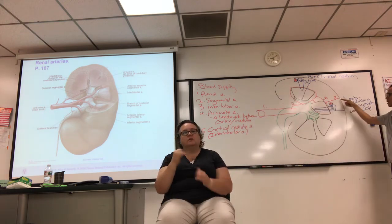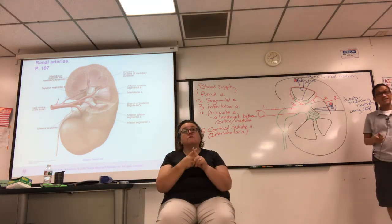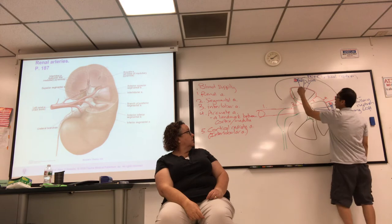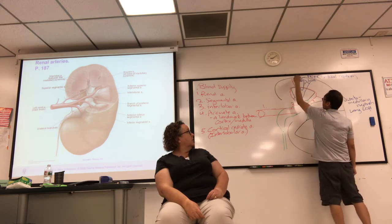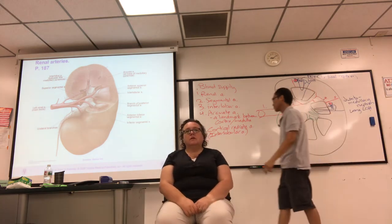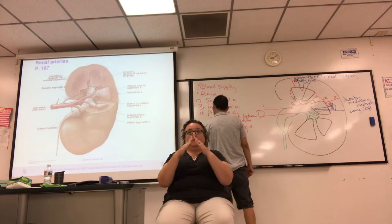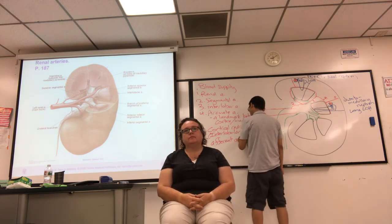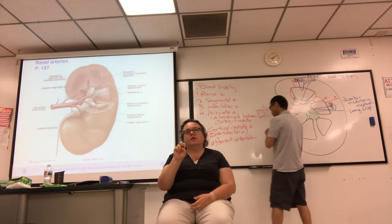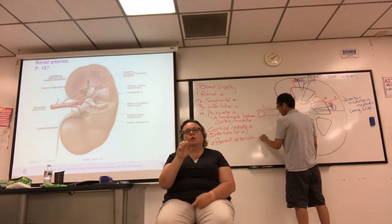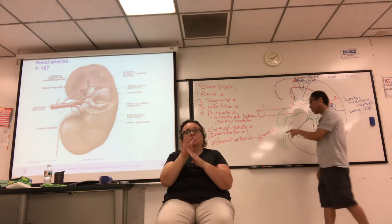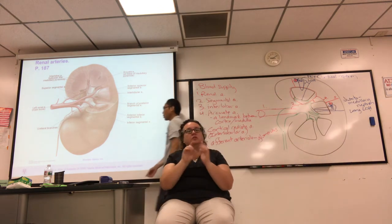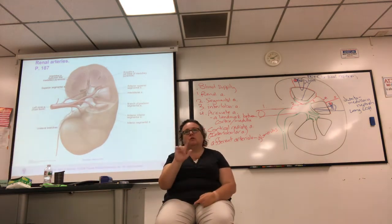The interlobular arteries radiate into the cortex. Coming off the interlobular is the afferent arteriole going into the glomerulus. In terms of blood flow, what comes after the glomerulus is the efferent arteriole. We've branched all the way down from renal artery to segmental to interlobar to arcuate to interlobular to afferent arteriole to the glomerulus.